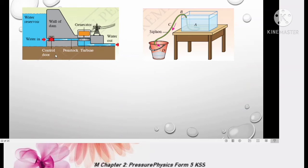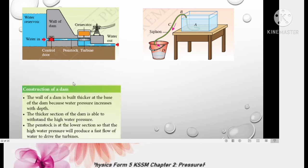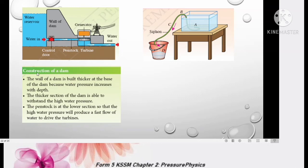The third application is water dam. You can look at the structure of water dam. It is thicker at the bottom compared to the upper part. The wall of a dam is built thicker at the base of the dam because water pressure increases with depth. The thicker section of the dam is able to withstand the high water pressure. The penstock is at the lower section so that the high pressure will produce a fast flow of water to drive the turbines.